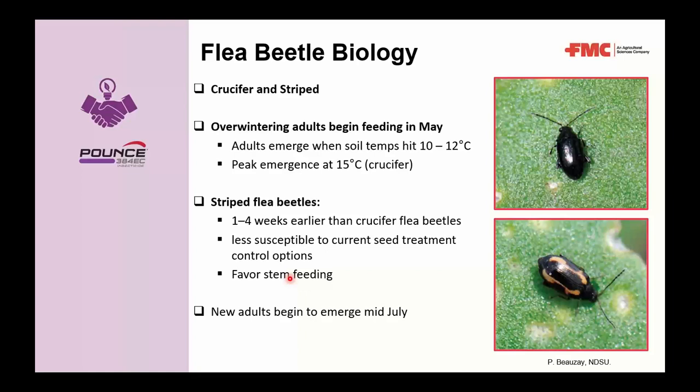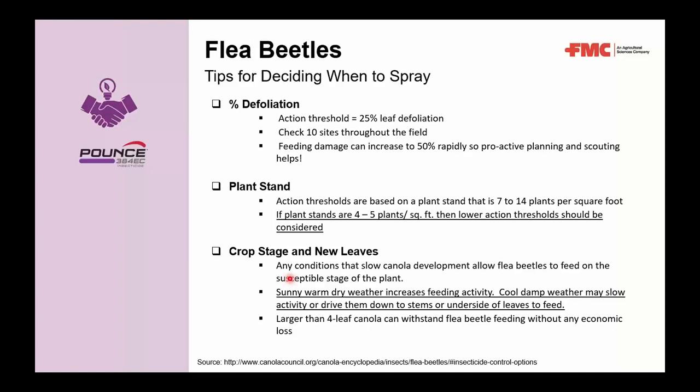When deciding when to spray flea beetles, there are three key areas: percentage defoliation, plant stand, and crop stage with new leaves. The action threshold is when greater than 25% of plants show leaf defoliation — check 10 sites throughout the field. Feeding damage reaching 50% is the economic threshold where insecticide provides economic benefit. Given today's high canola commodity prices, it's probably advantageous to act a little earlier on these thresholds.